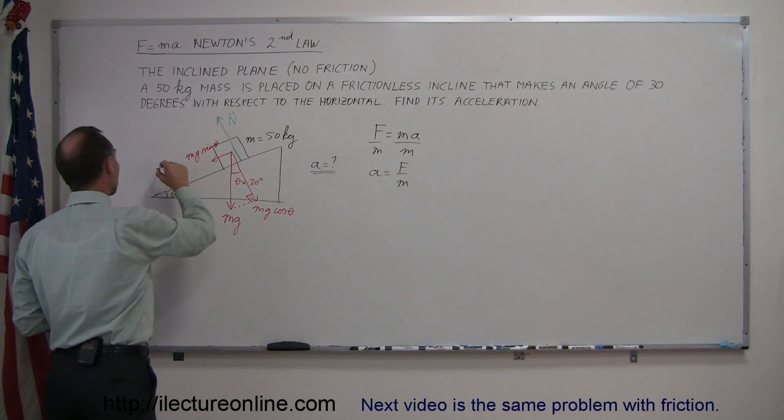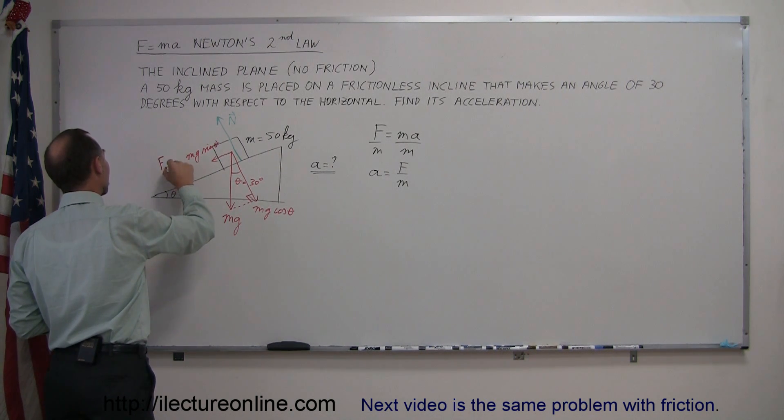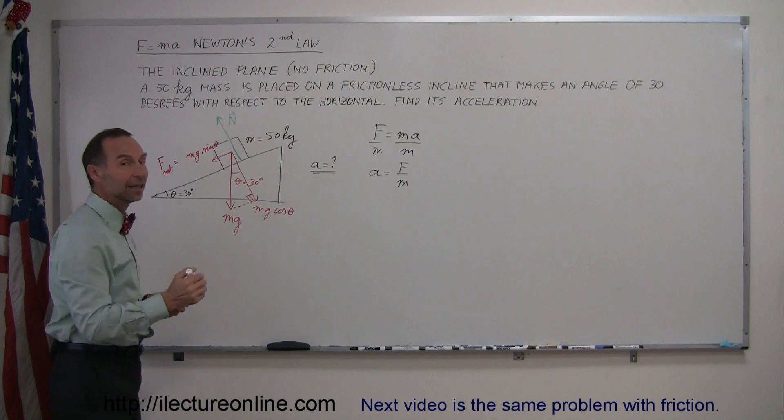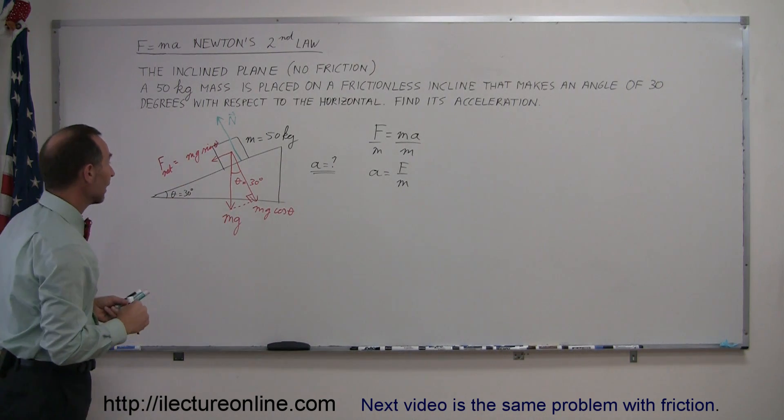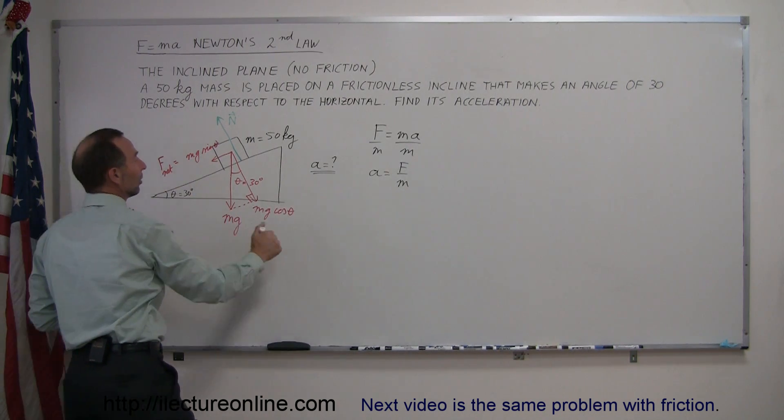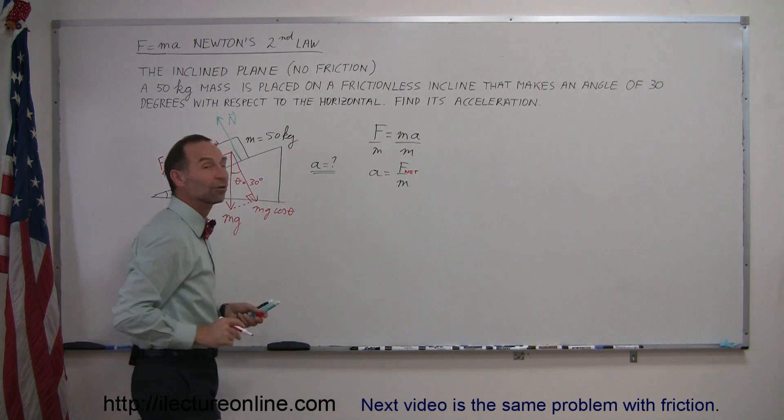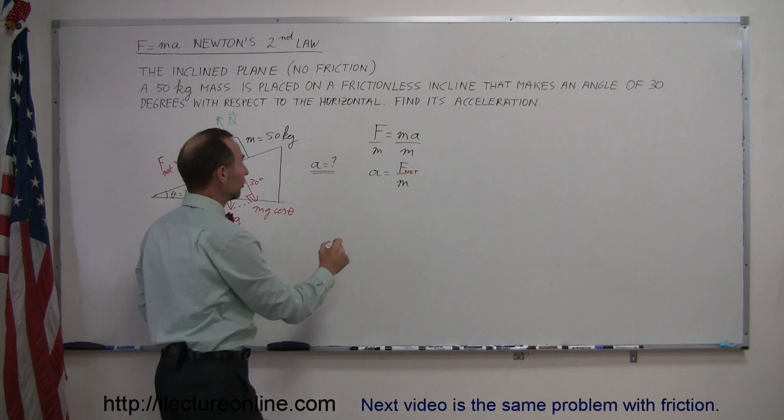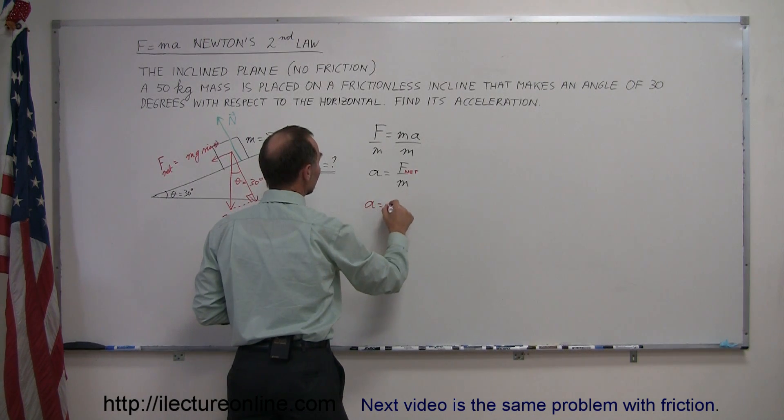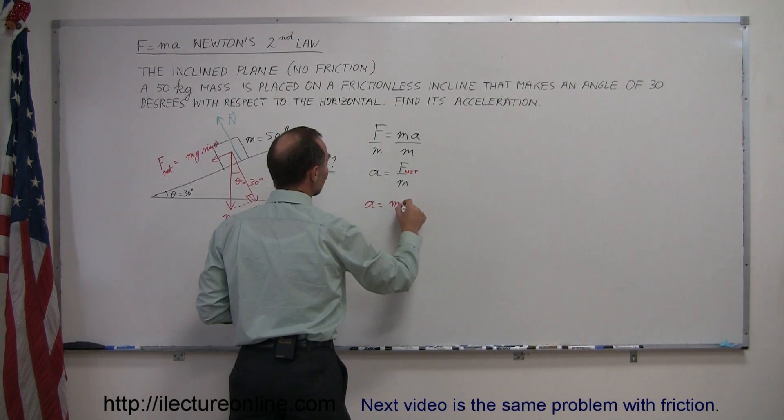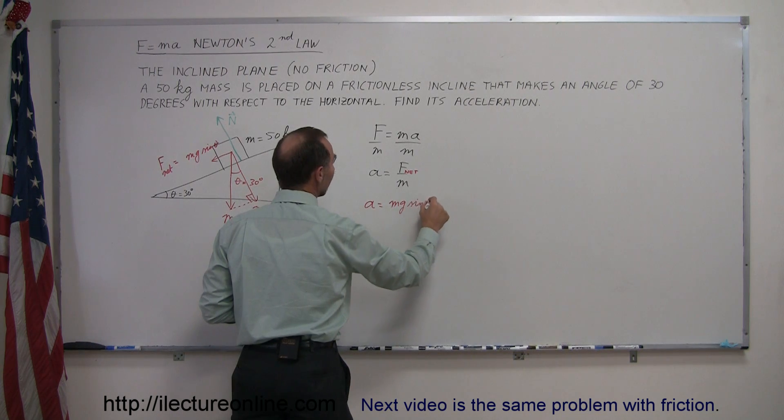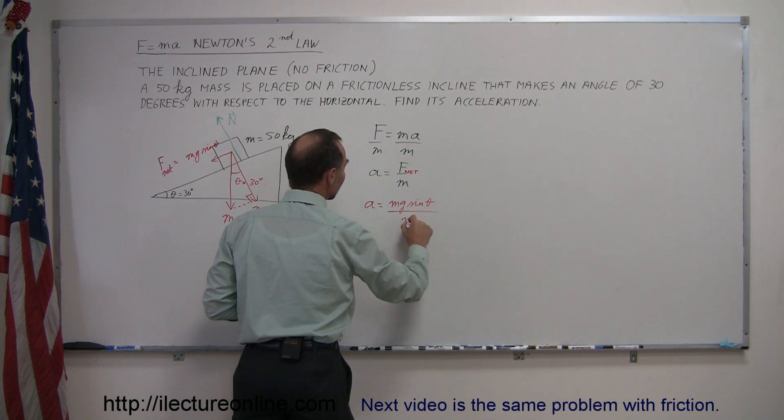This is the net force, so we can write F net is equal to mg sine theta, and it's directed down the incline. And that's the net force that will cause acceleration of the mass. So we can now say that acceleration a is equal to the net force, which is mg times the sine of theta, divided by the mass of the object m.